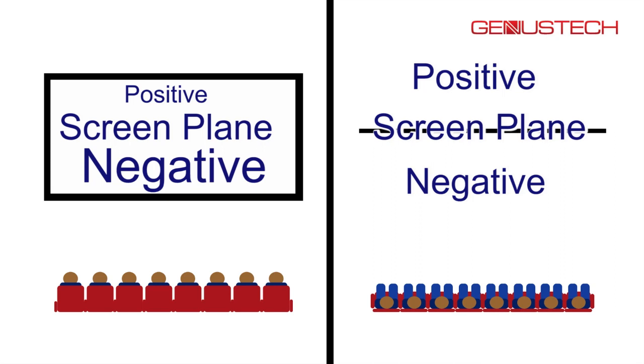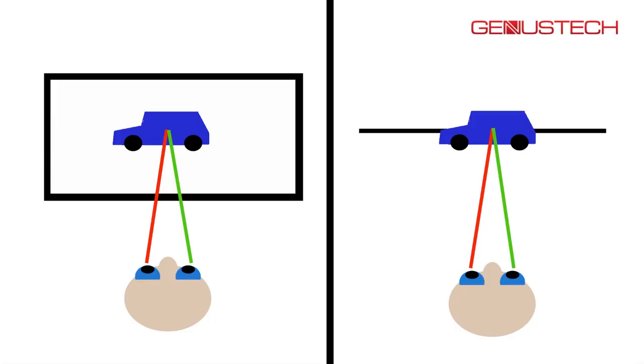When we show something on a screen — for example, a car — and we show a 2D car on a normal cinema screen, it will appear to be the distance away that the screen is from the viewer. It will appear to be on the screen in the cinema. Now, if we want to make that car appear as though it is behind the screen, we need to create a separate left and right image of that car, with the left image going to the left eye and the right image going to the right eye.